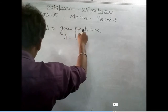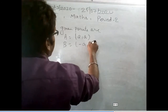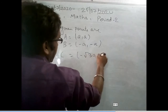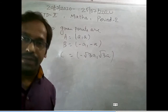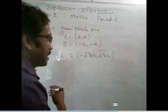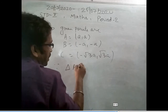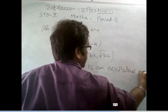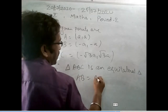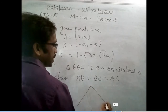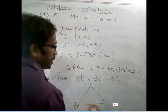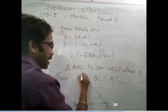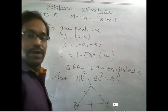I have written the points: A is (a, a), B is (-a, -a), and C is (-√3a, √3a). If this triangle ABC is equilateral, that means AB will be equal to BC will be equal to AC. So AB square will be equal to BC square will be equal to AC square. I am doing this because the square roots from the distance formula can be removed. So now using the distance formula: (x2 minus x1) whole square plus (y2 minus y1) whole square, that is equal to (-2a) whole square plus (-2a) whole square, that is 4a² plus 4a², that is 8a². So AB² equals 8a².